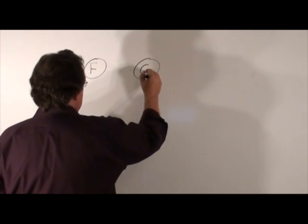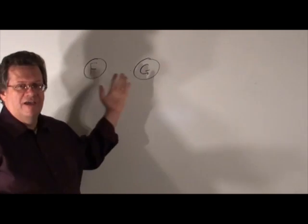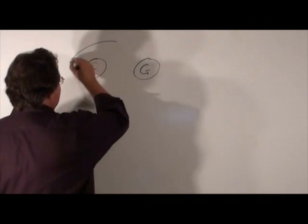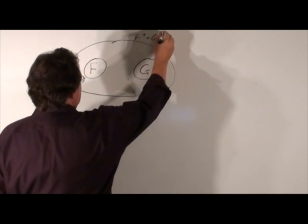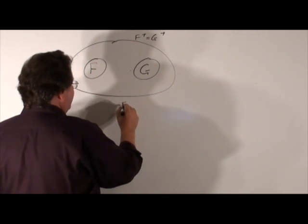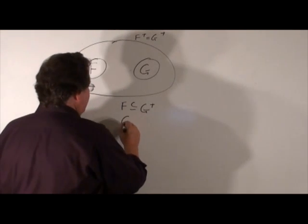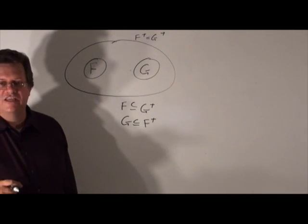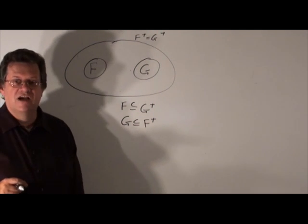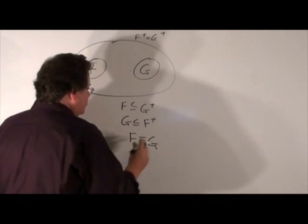The next concept is called covers. Given two sets of functional dependencies, F and G, if F is a subset of G closure, we say G covers F. And if G is a subset of F closure, we say F covers G. So if G covers F and F covers G, we would say that F is equivalent to G.